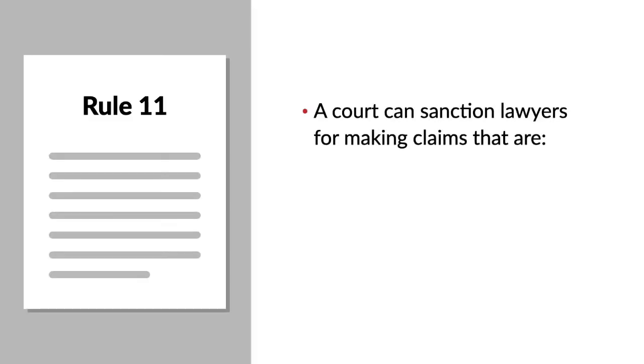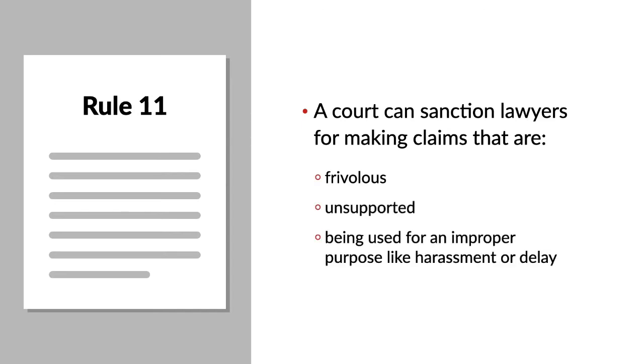Under Federal Rule of Civil Procedure 11, a court can sanction lawyers for making claims that are frivolous, unsupported, or being used for an improper purpose like harassment or delay.